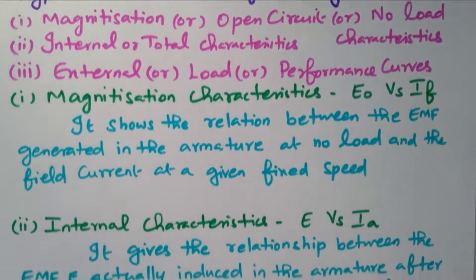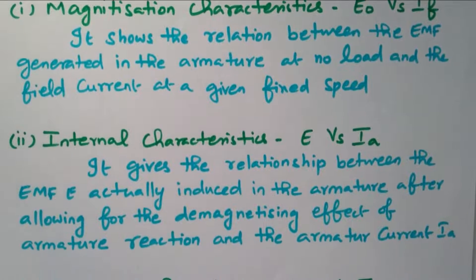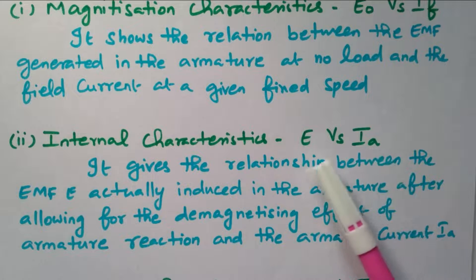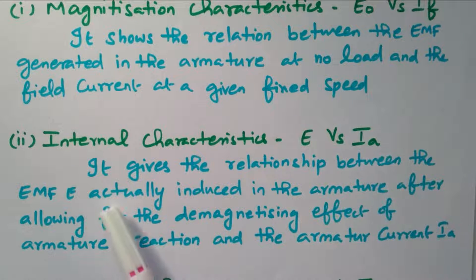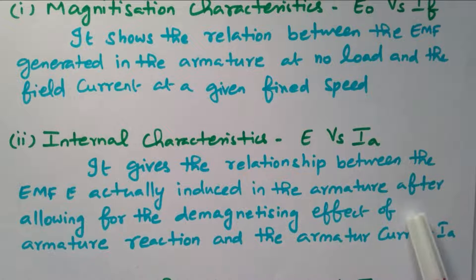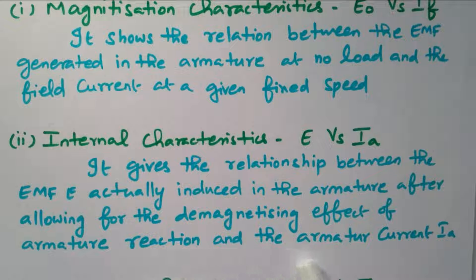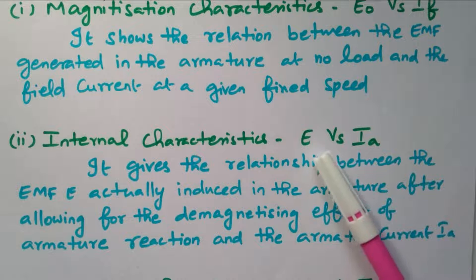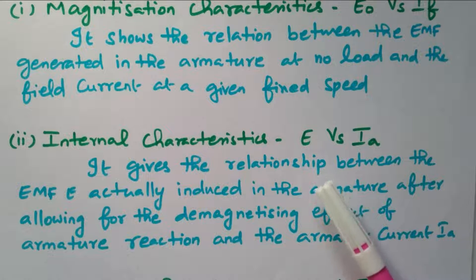Internal characteristics is drawn between EMF generated versus armature current. It gives the relationship between the EMF actually induced in the armature after allowing the demagnetization effect of armature reaction, and the armature current — that is the relation between armature current and EMF generated inside the armature.